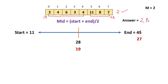Checking mid = 19: from 0 to 4 the sum is already 19; then 11 to 8 is also 19; then 7 is a separate part. We get three parts, which is greater than M. So 19 is not the proper value — it's too small, causing more splits. We need to increase it, so we set start to mid plus 1.